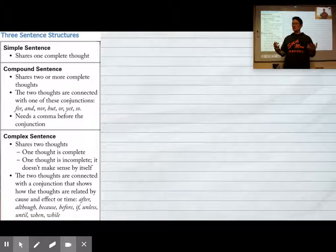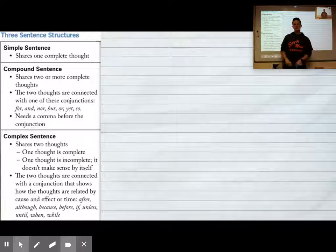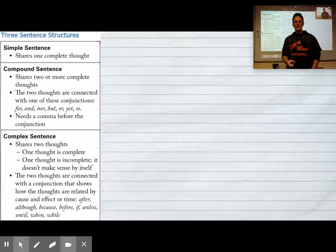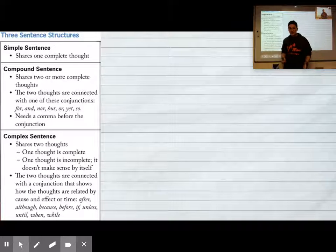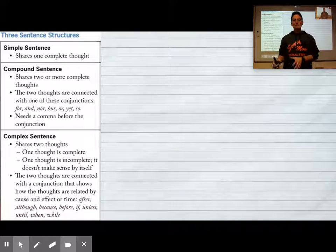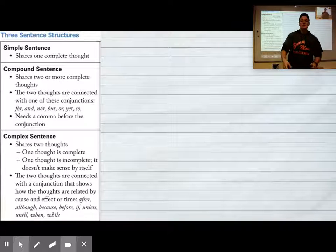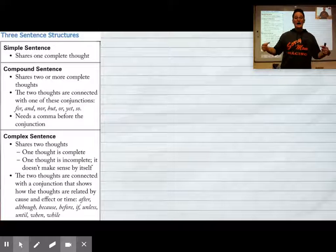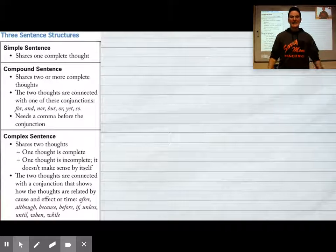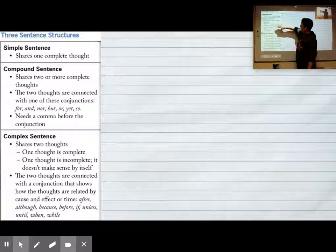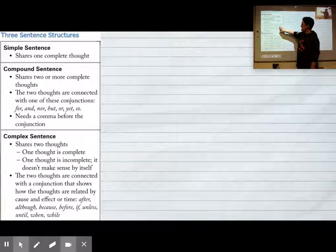A simple sentence is just one thought, so I have on shoes, that's one thought. A compound sentence shares two or more complete thoughts. If you think about a compound word, a compound word has two complete words in it to make a new word. A compound sentence has two complete thoughts. For example, I could say I have on a shirt and I have on shoes.